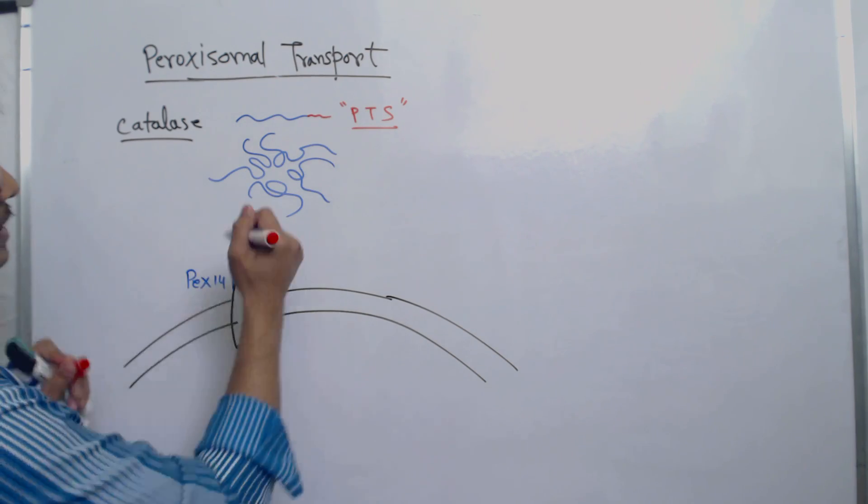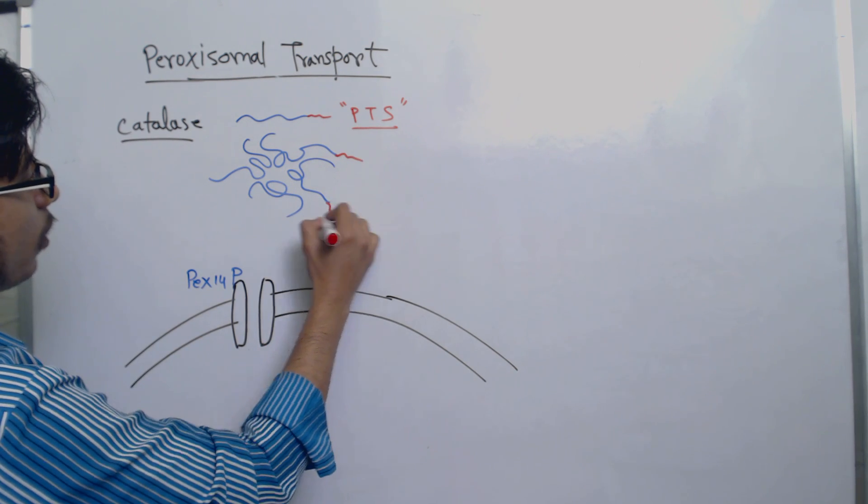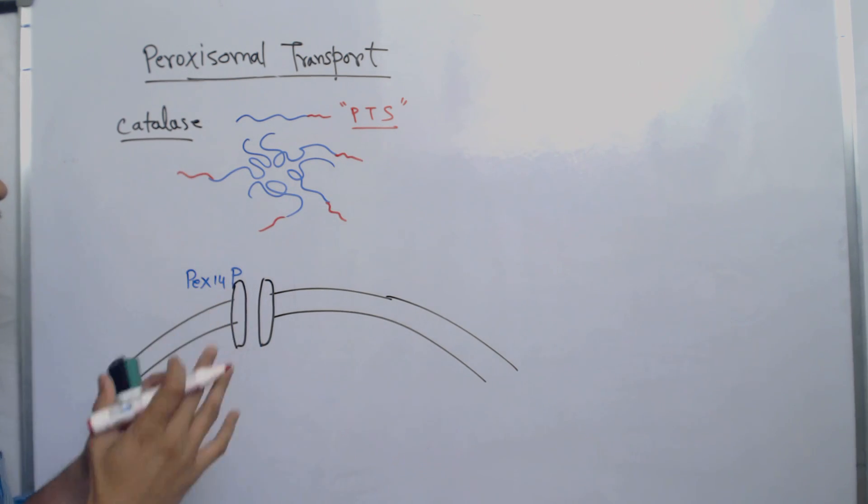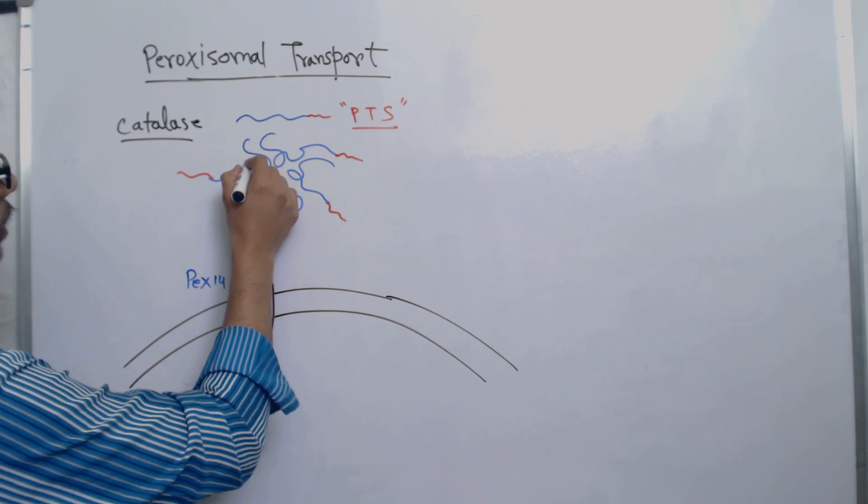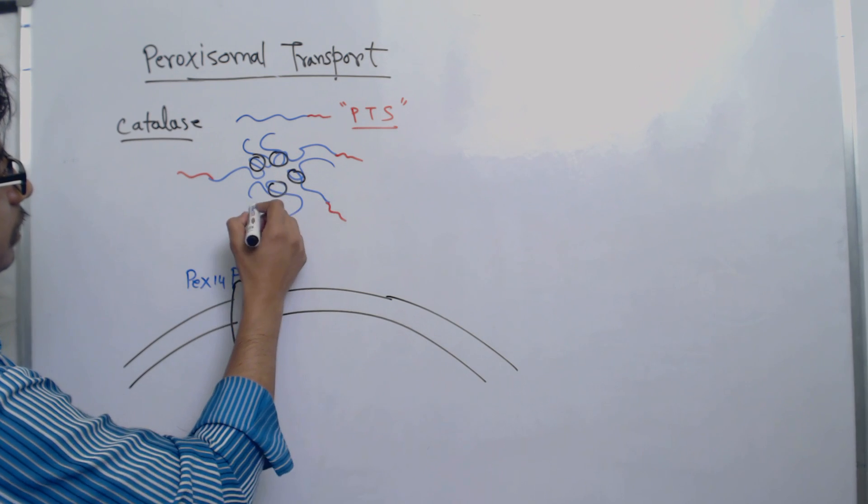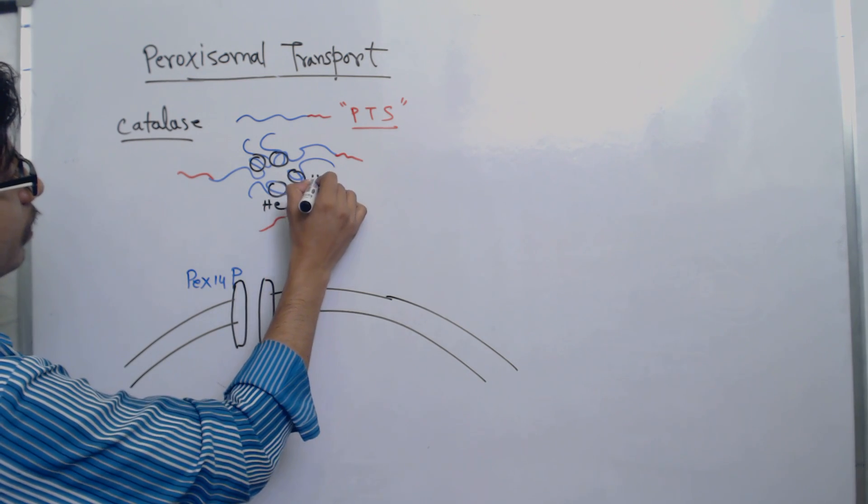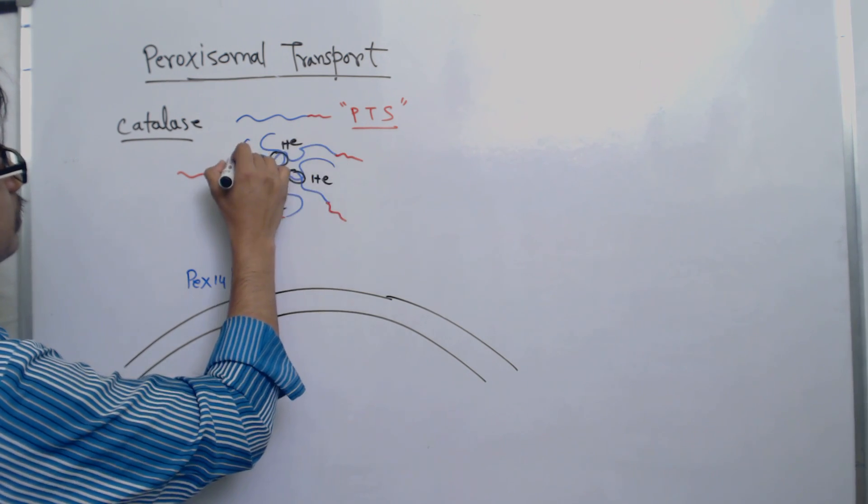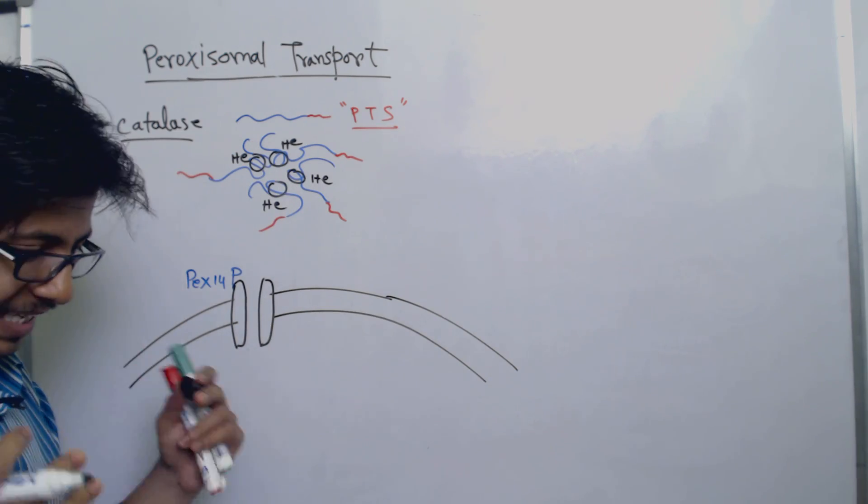With the help of these PTS segments which are facing outside for all four subunits of the catalase enzyme, all of them are held together with heme - the iron cluster proteins known as the heme regions.